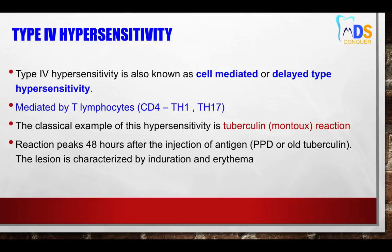Type 4 is cell-mediated or delayed-type hypersensitivity, mostly mediated by T lymphocytes — specifically CD4 TH1 and TH17 cells. Note: CD4 TH2 is more concerned with Type 1, while CD4 TH1 and TH17 are more concerned with Type 4. The classical and most common example is the tuberculin reaction.